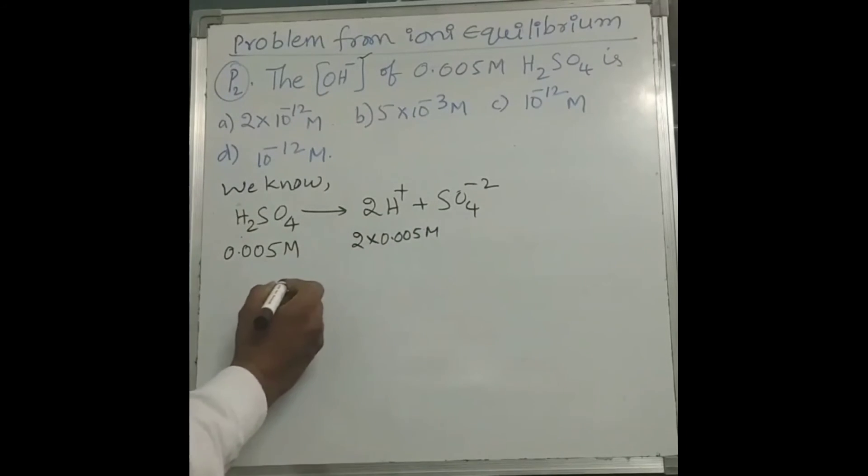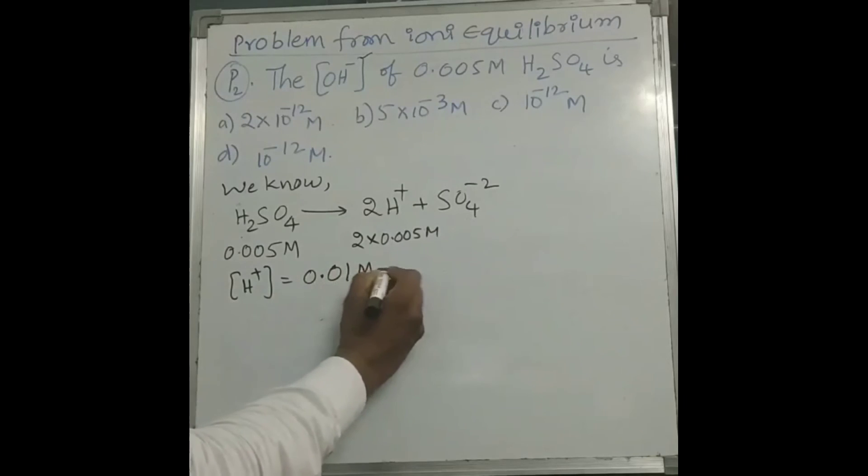So according to this data, H+ ion concentration here is 2 into 0.005, that equals to 0.01M. We can also write this as 10 power minus 2M.